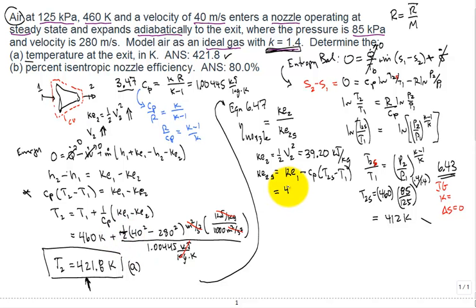We calculate the inlet kinetic energy, which was just 40 squared divided by 2000—that'll give us the units of kilojoules per kilogram. Then we have minus our specific heat, which was 1.0044, our T2s 412 minus T1 460. You calculate the specific kinetic energy at the exit assuming isentropic flow is 49.008 kilojoules per kilogram.